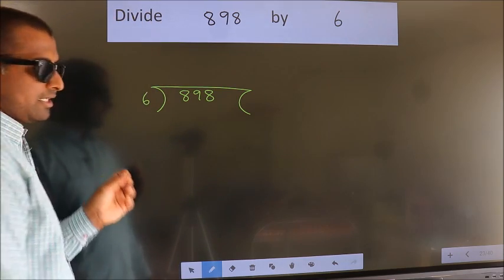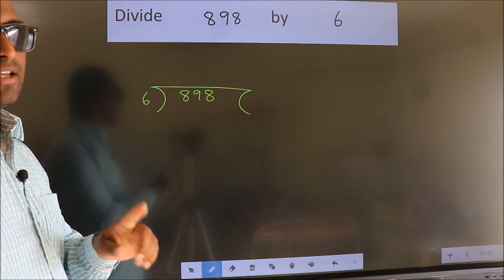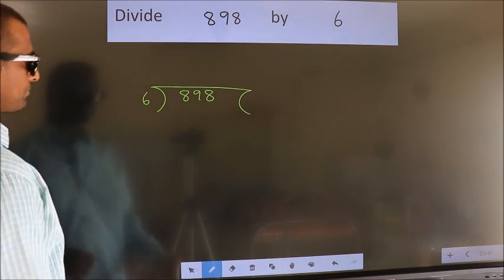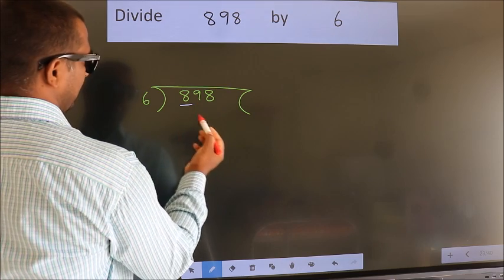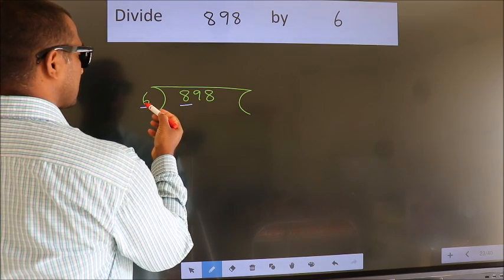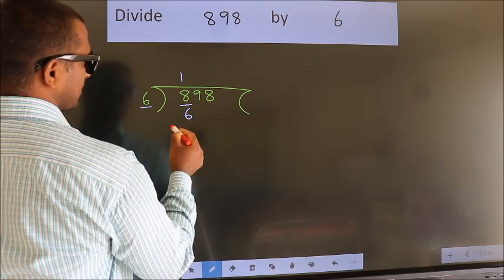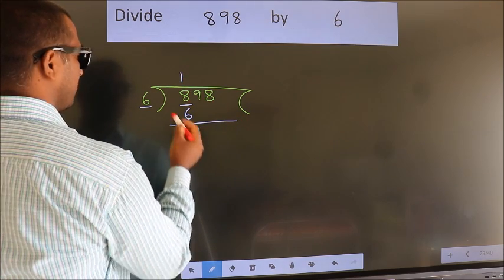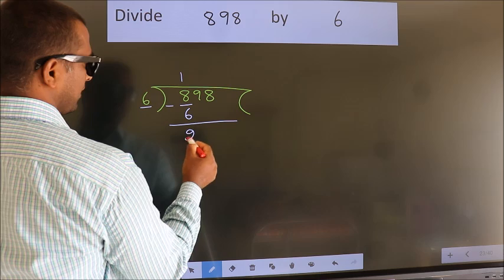This is your step 1. Next, here we have 8, here 6. A number close to 8 in 6 table is 6 once 6. Now we should subtract. We get 2.